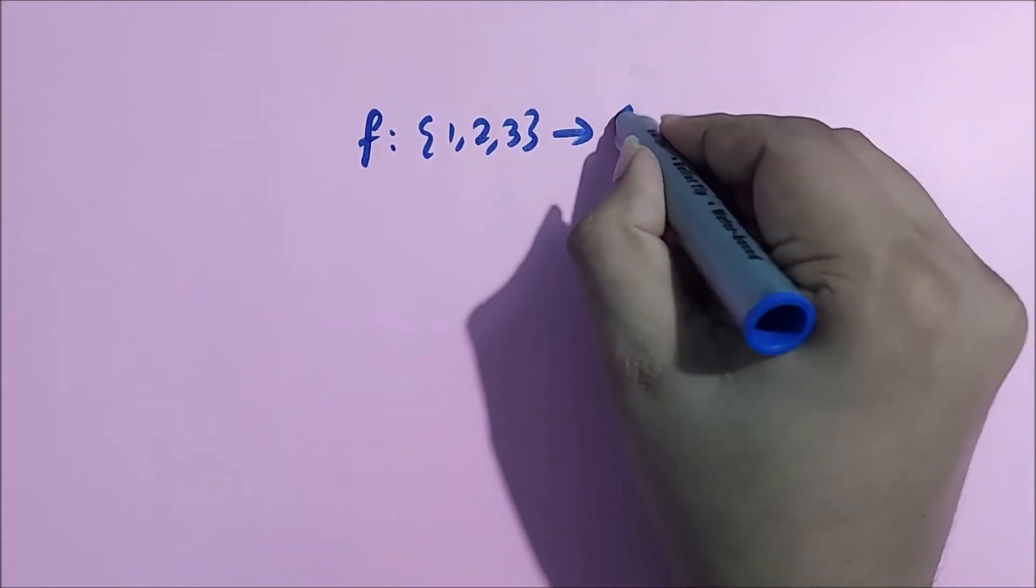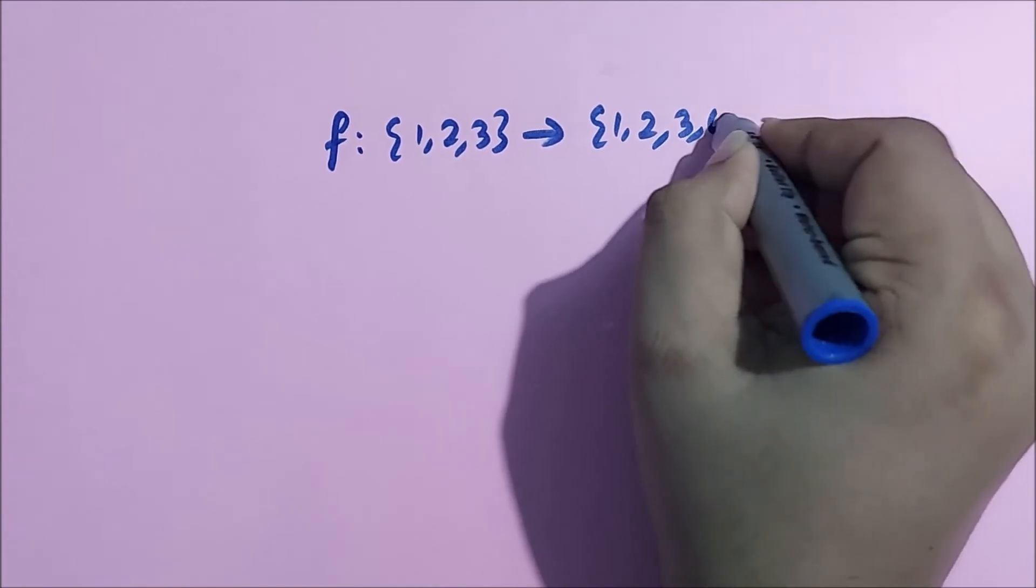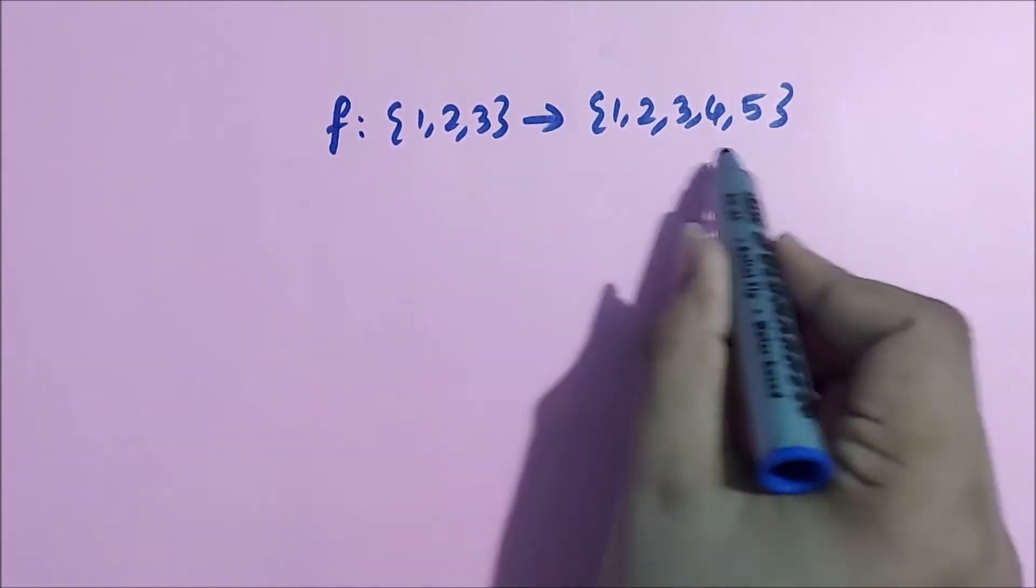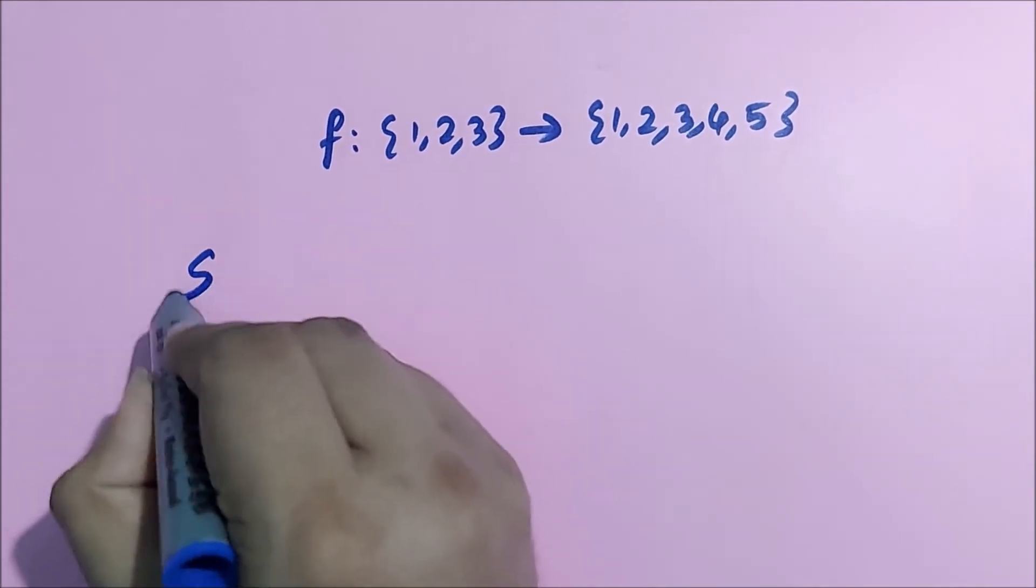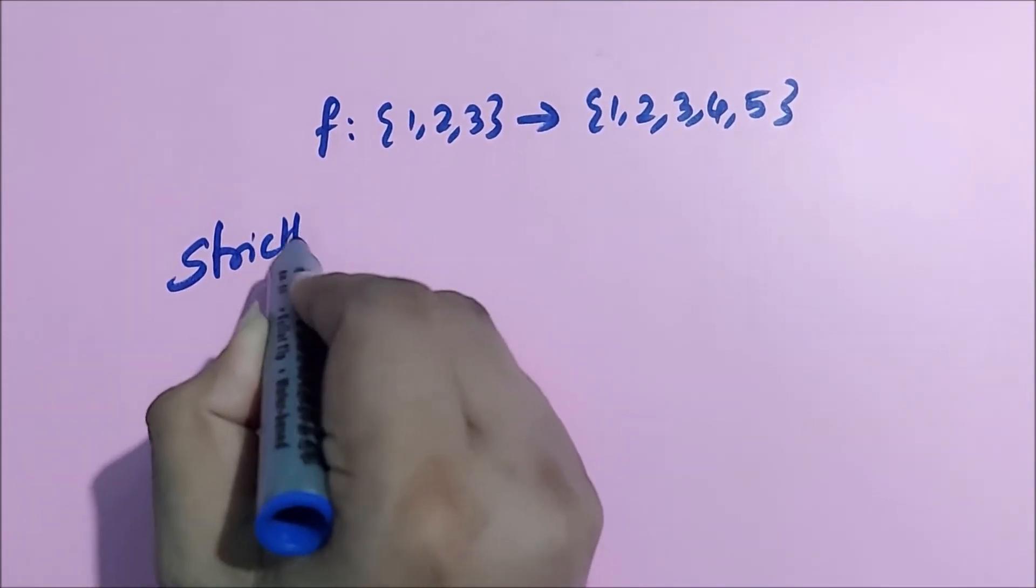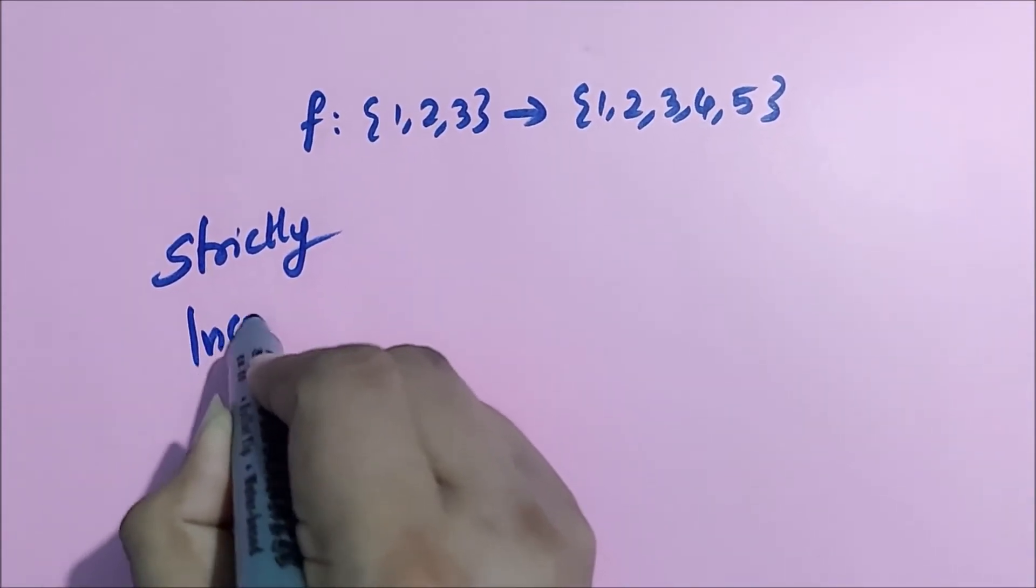Let's count the number of strictly increasing functions from 1, 2, 3 to 1, 2, 3, 4, 5. So here we are going to count the number of strictly increasing functions.